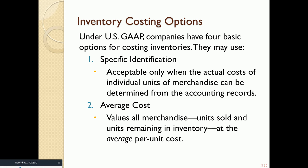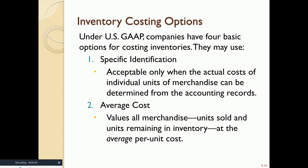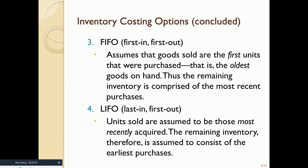Here are the four options for inventory costing. The first is called Specific Identification. The second is called Average Cost. The third is called FIFO, which stands for First In, First Out. And the fourth is called LIFO, Last In, First Out. Let's practice each of these.